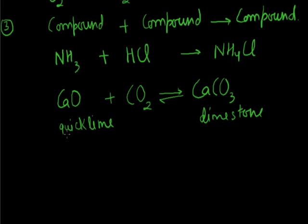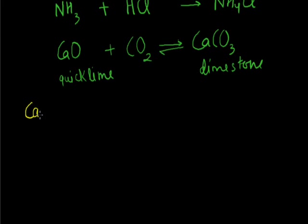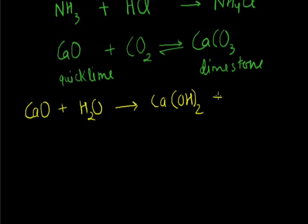Another example: calcium oxide (quick lime) reacts with water and forms calcium hydroxide plus heat. This reaction is exothermic in nature, meaning energy is evolved. Balancing: one calcium on each side, two hydrogen on each side, and two oxygen on each side — the reaction is balanced. Calcium oxide is known as quick lime.